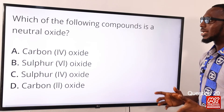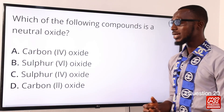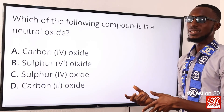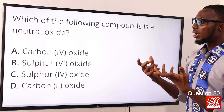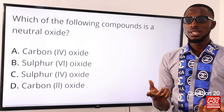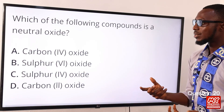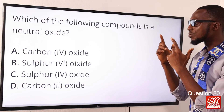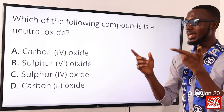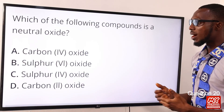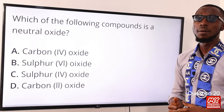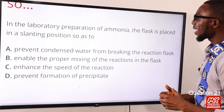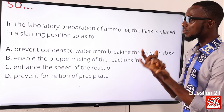Question twenty: which of the following compounds is a neutral oxide? Neutral oxides are neither acidic nor basic in properties, and they are neutral to litmus paper. Options A to C are acidic in nature. When we come to option D, carbon monoxide (CO) is an example of a neutral oxide. So the correct option is option D for carbon monoxide.